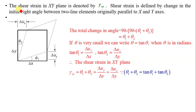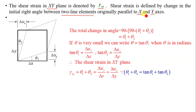The shear strain in the xy plane is denoted by gamma xy. Shear strain is defined as the change in the initial right angle between two line elements originally parallel to the x and y axes.